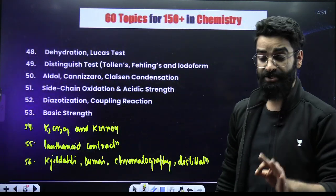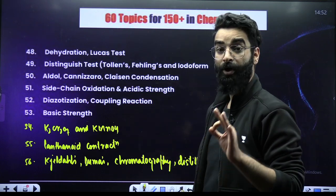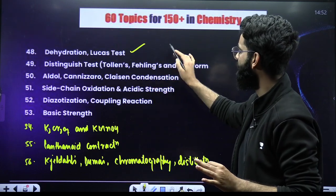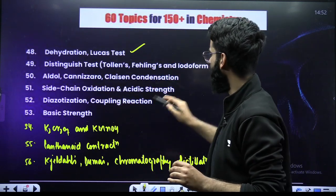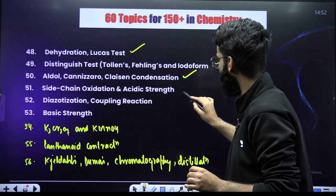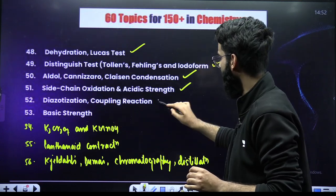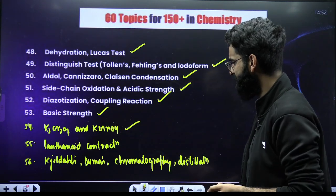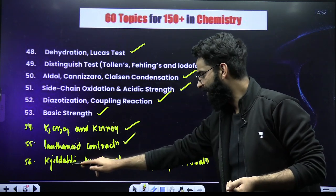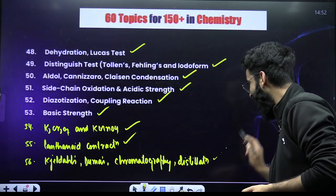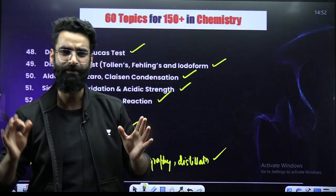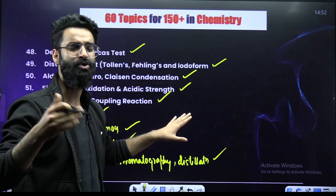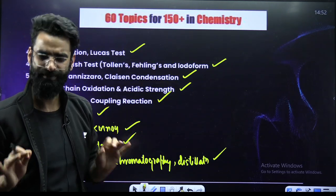There are a few more additional topics so that you don't miss a single question in chemistry: dehydration, Lucas test, distinguishing tests involving Tollens, Fehling's and Iodoform, Aldol, Cannizzaro, Claisen condensation, side chain oxidation and acidic strength, diazotization and coupling reaction, basic strength of amines, K₂Cr₂O₇ and KMnO₄ from D and F block elements, lanthanoid contraction, Kjeldahl's method, Dumas method, chromatography and distillation. Trust me, if you do these topics you will score 140 plus in chemistry.